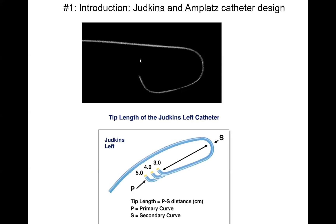I'll start with Judkins Left. This is the shape of it. It has two curves — first and second curve. The important thing you hear us say JL3, 4, 5 — it's the distance between the first and the second curve, what we call the arm of the catheter. The length of this arm in centimeters is what defines JL3, 4, 5. So JL4 is 4 centimeters, JL5 is 5 centimeters.